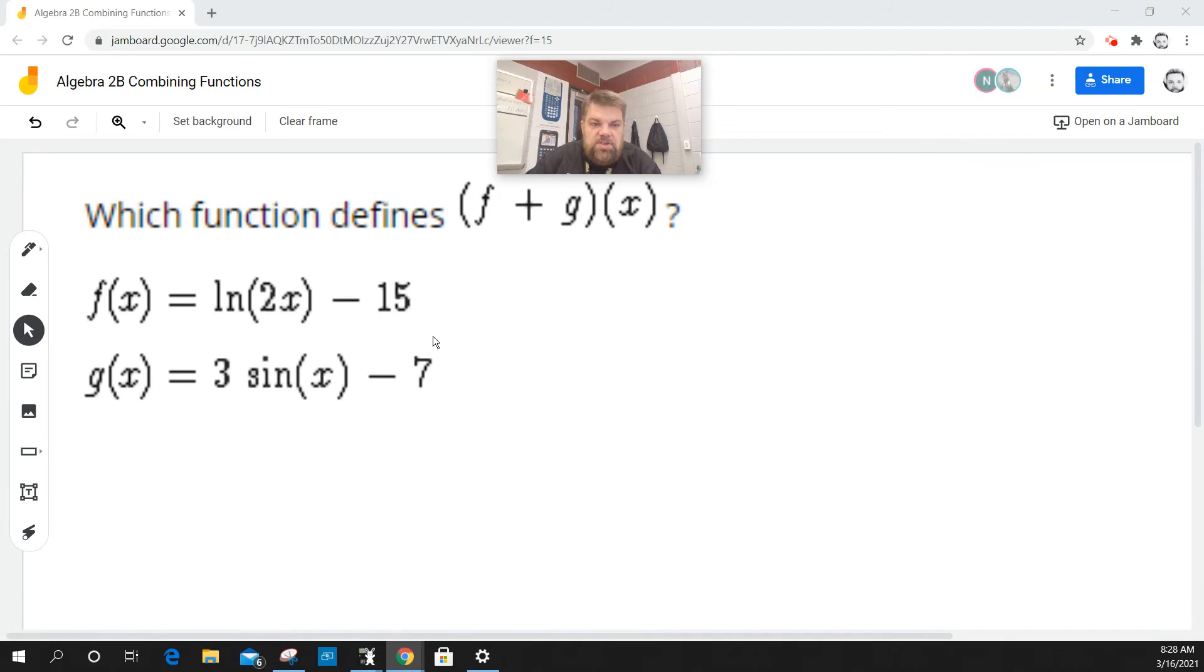Okay, so now for this one we're just going to add f plus g. So f is the natural log of 2x minus 15, plus g which is 3 times sine of x minus 7.